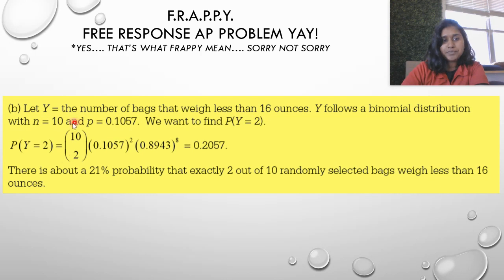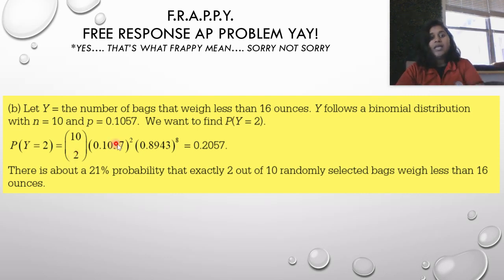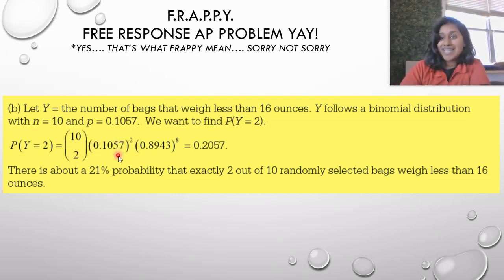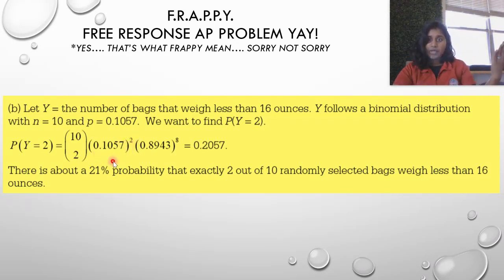This first probability is going to be your successes raised to the number of successes desired. This is going to be your probability of failures raised to the number of failures desired. Let's see what that looks like in our question. Our binomial right here is going to be the total number that I want, 10, and the total number of successes I want, 2. That's the total number of bags I selected and two of them I want to be at a weight of less than 16 ounces.